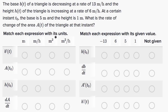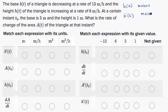Let's match each expression with its units. The first one is B prime of T. This is the rate of change of the base with respect to time. B of T is the base, which is in meters. So B prime of T is how much the base is changing with respect to time — that's going to be meters per hour, as they tell us it's decreasing at a rate of 13 meters per hour. So B prime of T is in meters per hour.